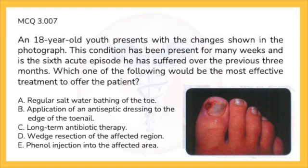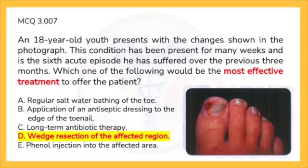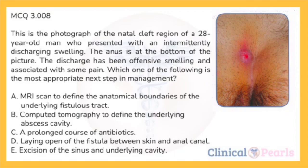Next: an 18-year-old youth presents with changes shown in the photograph. This condition has been present for many weeks and is the sixth acute episode over the previous three months. Which would be the most effective treatment? A: regular saltwater bathing of the toe. B: application of an antiseptic dressing to the edge of the toenail. C: long-term antibiotic therapy. D: wedge resection of the affected region. E: phenol injection into the affected area. The most effective treatment for this recurrent problem would be a wedge resection of the region with removal of the ingrowing edge of the nail — D is correct. The rest are only temporizing measures.